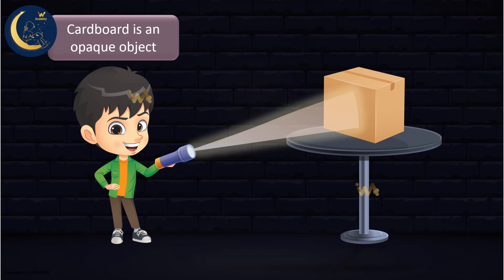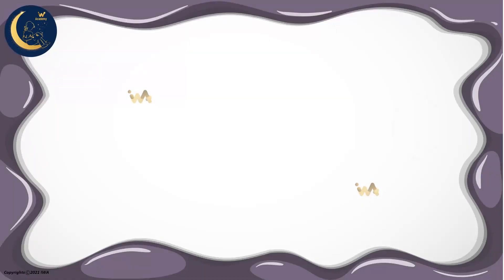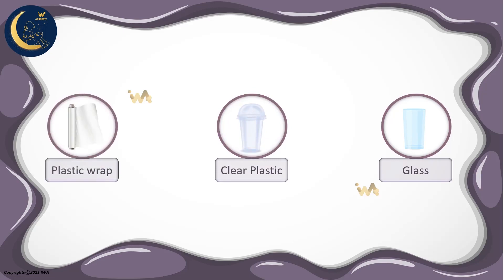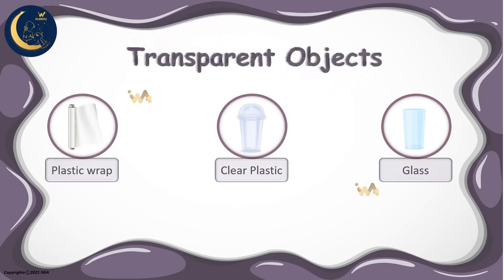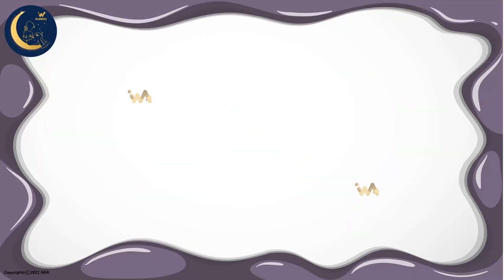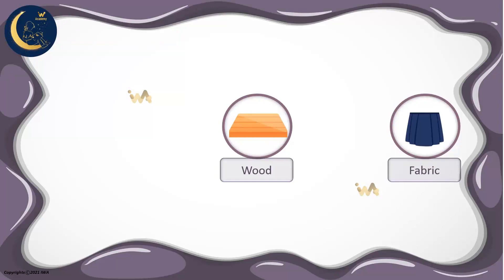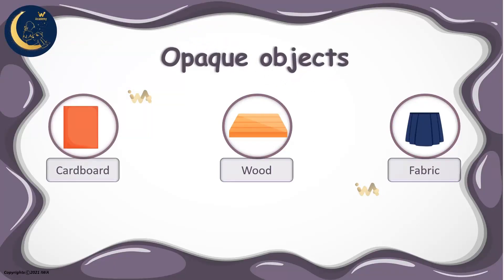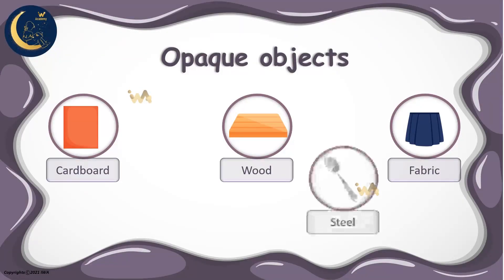Great work! So, my friends, glass, clear plastic, and plastic wrap are all transparent objects that allow light to pass through easily. In addition, water and the air around us are also transparent. However, fabric, wood, and cardboard are all opaque objects — they do not allow light to pass through. And likewise, steel and the human body.